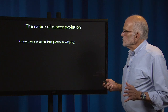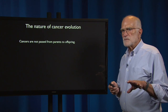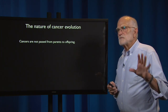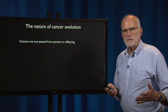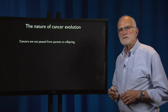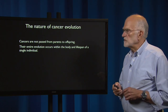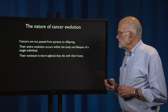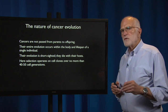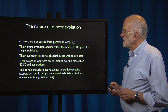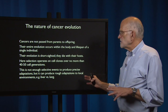Cancer evolution is not something that is passed from a parent to an offspring, with very few exceptions. There's a tumor in Tasmanian devils and one other that can actually be transmitted, but 99.99% of all cancers are not passed from parents to offspring. Their entire evolution occurs within the body and the lifespan of a single individual human being. Their evolution is short-sighted because they die with their hosts. Here, selection is operating on cell clones over no more than about 40 to 50 cell generations — not enough selective events to produce any precise adaptation, but it can produce a rough adaptation to a local environment.